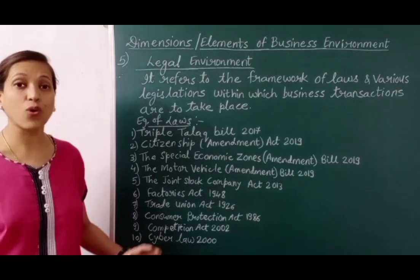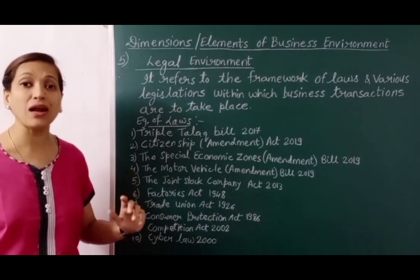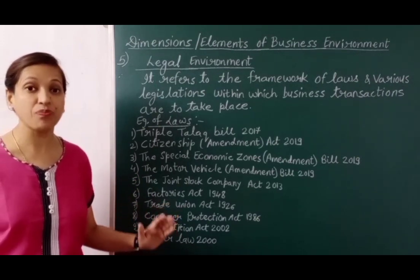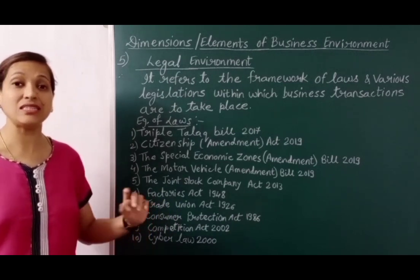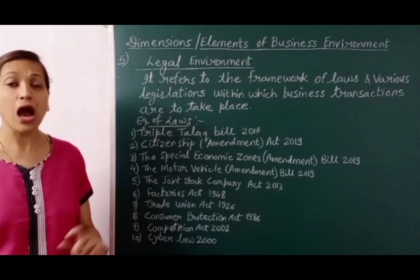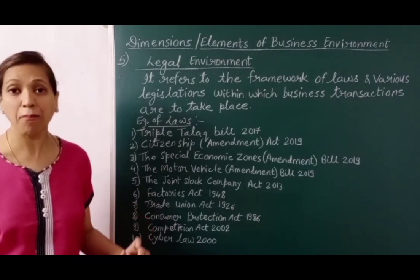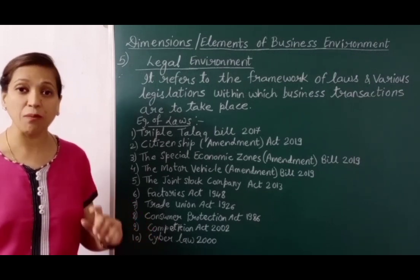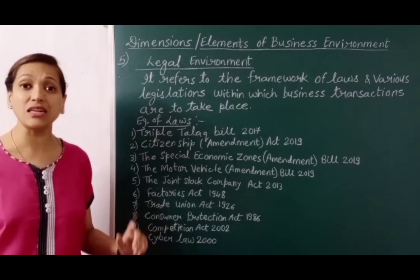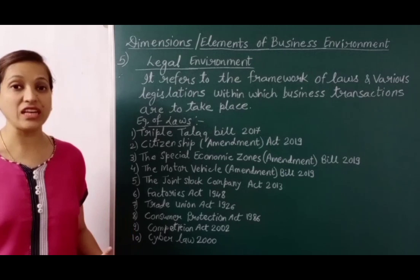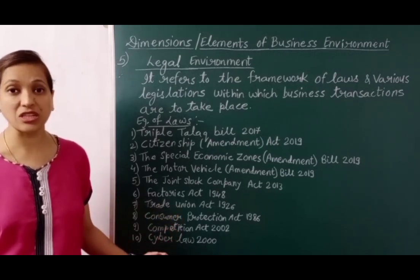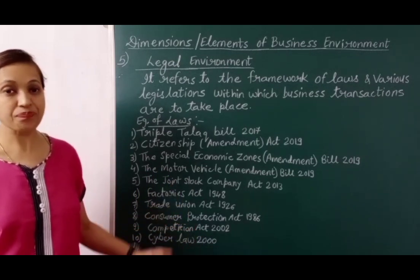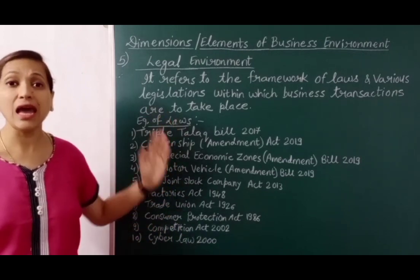To protect consumers, the government mandates that packages must have proper labeling — including manufacturing date, expiry date, ingredients, and warnings. For example, addictive products like cigarettes carry warnings such as 'Smoking is injurious to health.' Advertisements for alcohol or smoking are banned, but if shown in an advertisement or film, a warning must appear below. Similarly, advertisements showing stunts must also carry warnings below. These are all legal rules and regulations — if anyone breaks them, a fine is imposed or legal action can be taken.